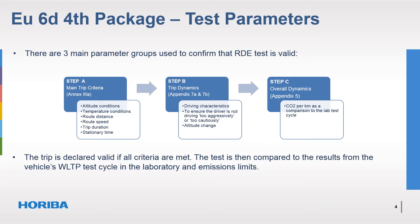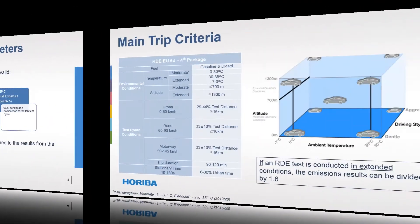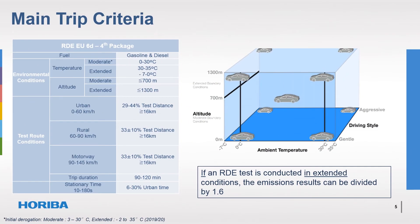The test results are then compared to the vehicle's WLTP test cycle results from the laboratory and the applicable emissions limits. The specifications laid down in the directive that must be met to validate the RDE test cover test duration, temperature range, altitude, route design, and driving speeds. As you can see, these are quite restricted.